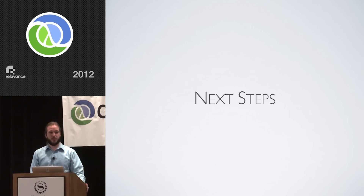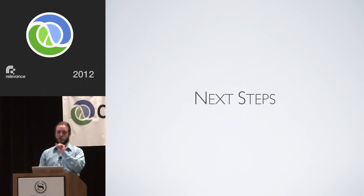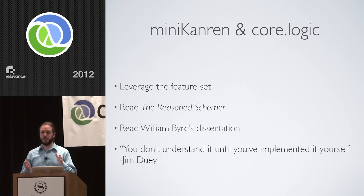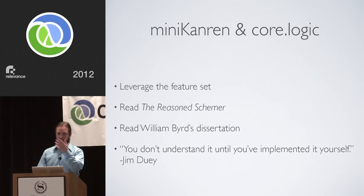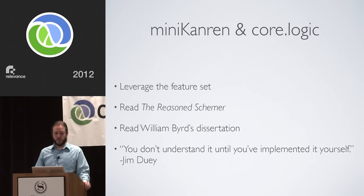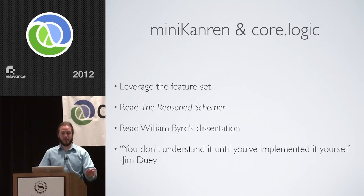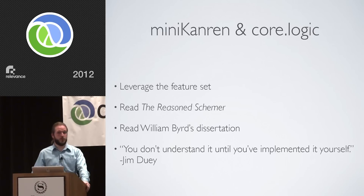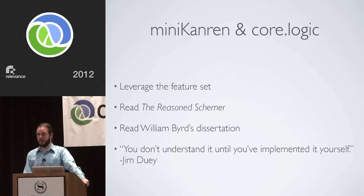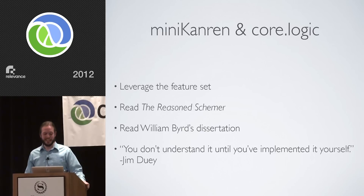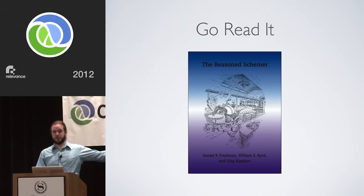Is this all we can do? We're using just the thin upper crust of core.logic and miniKanren — there's almost no condi up there, I can't even do an or yet. The first thing is to think through how we can fully leverage the miniKanren feature set and by extension core.logic. There's a lot more there for thinking about testing in the large. I encourage everyone to go read The Reasoned Schemer and William Byrd's dissertation — I tried, I couldn't finish it. And there's this daunting quotation from Jim Dewey, who said at Strange Loop that you don't understand miniKanren until you've implemented it yourself. I hope that's not true because I'm not going to get there any time soon, but it's a point well taken — there's a lot of subtlety there.